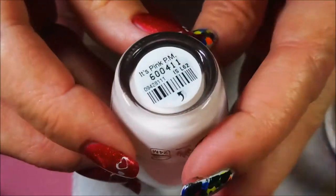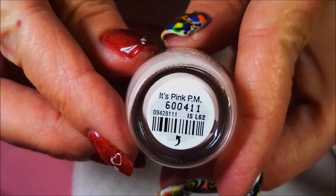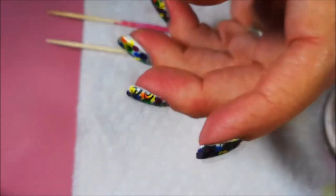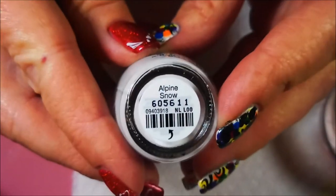This is from the Infinite Shine, and this one's called It's Pink PM, and then white I have OPI's Alpine Snow. You guys know I don't love this one, so I'm using it in a water marble.